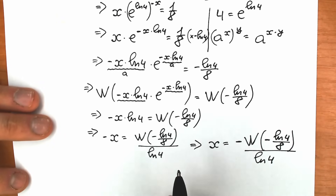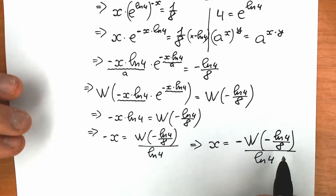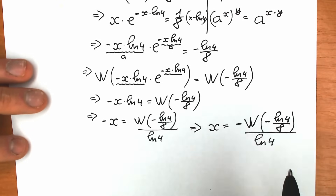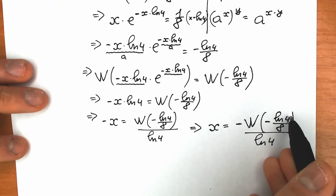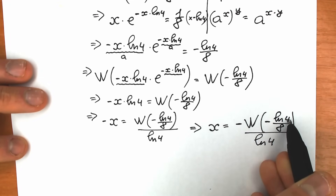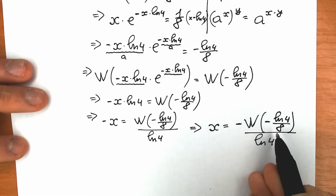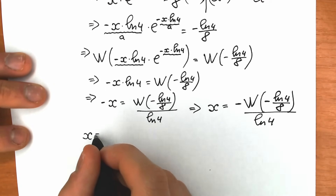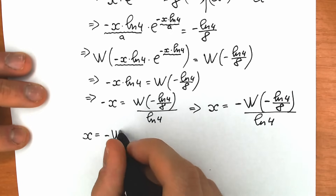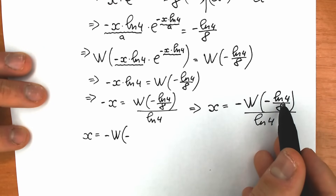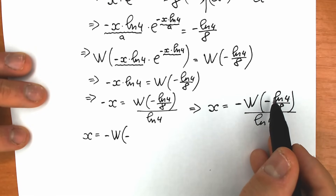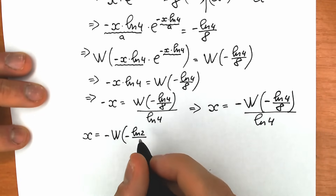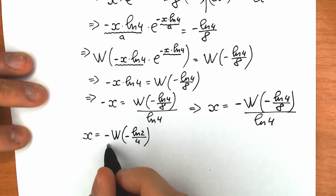Multiplying both sides by minus 1, we have x equals minus Lambert W of minus natural log 4 over 8, divided by natural log 4. We can simplify: natural log 4 equals natural log of 2 squared equals 2 natural log 2, so this 2 cancels with the 8, giving us natural log 2 over 4. Therefore x equals minus Lambert W of minus natural log 2 over 4, divided by natural log 4.